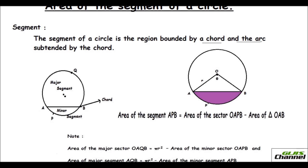You have a circle with a center, and you have a chord AB here. The chord divides the circle into two portions — they are not equal portions since the chord is not the diameter.